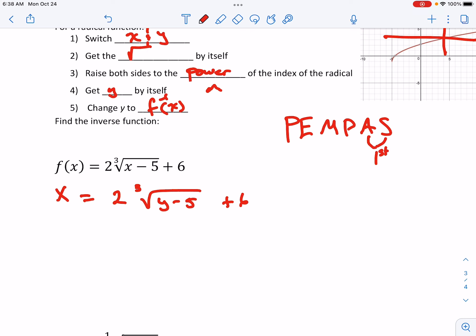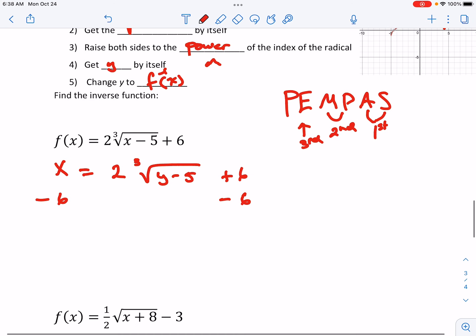So I'm going to take care of adding and subtracting first. Then I'll take care of multiplying and dividing second. And then exponents third. So subtract the six both sides.